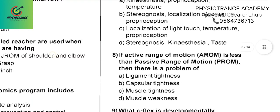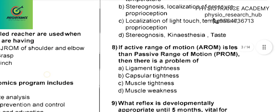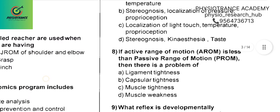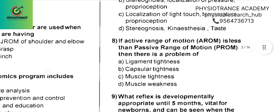Question 8: If active range of motion is less than passive range of motion, then there is a problem of — since the person cannot perform the active range of motion, it means their muscle is weakened. The answer is Option D, muscle weakness.